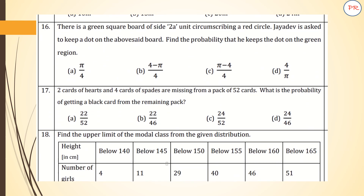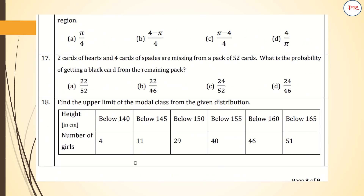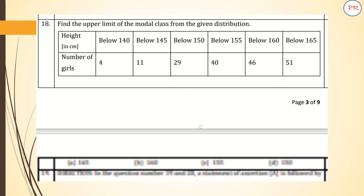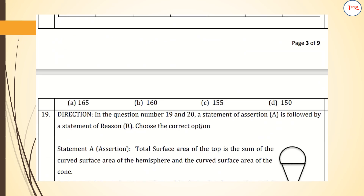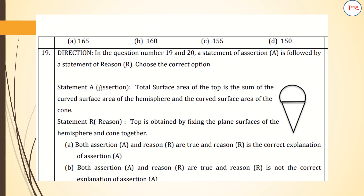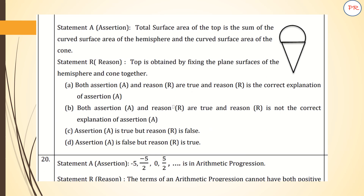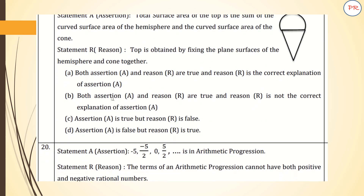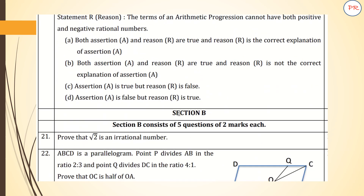Question number 16 is from probability. Question 18 is from the statistics part. Questions 19 and 20 are assertion-reason type. Here, two statements will be given: the first statement will be the assertion and the second will be the reason. Four options will be provided and accordingly you have to answer.